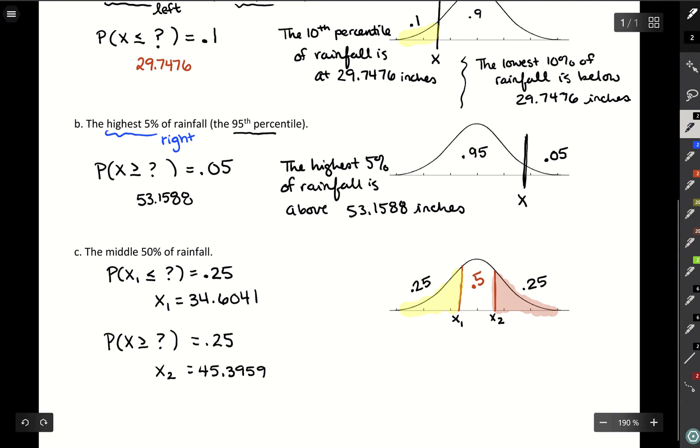So the middle 50 percent of rainfall is between 34.6041 and 45.3959 inches.